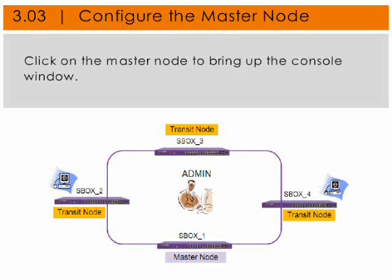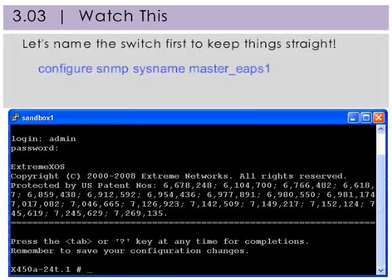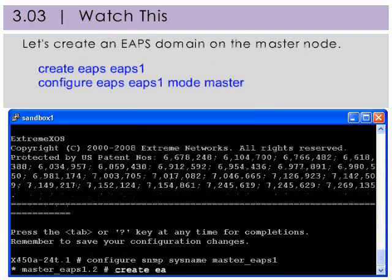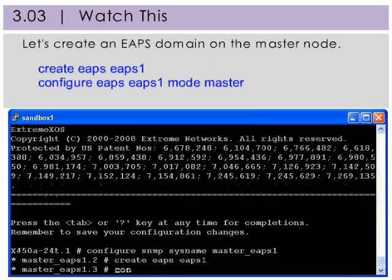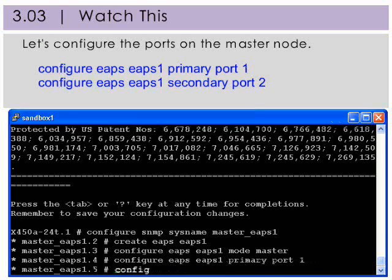Click on the master node to bring up the console window. Let's give the master node switch a name to keep things straight as we go along. Here we'll create an EAPS domain on the master node — let's call it EAPS1. We'll configure the ports on the master node, both primary and secondary port, for EAPS1.